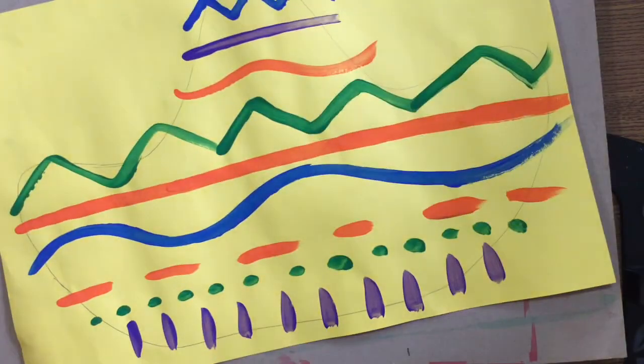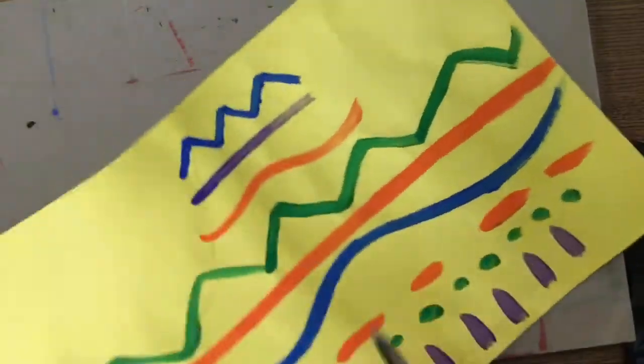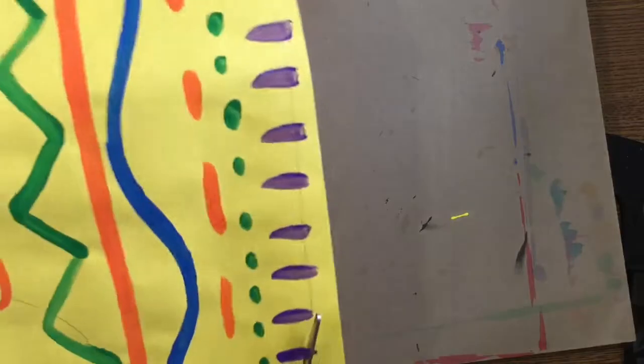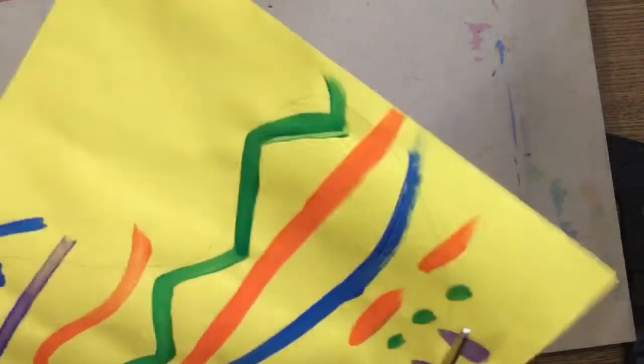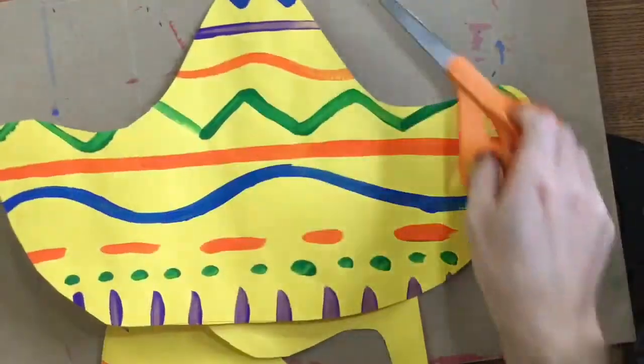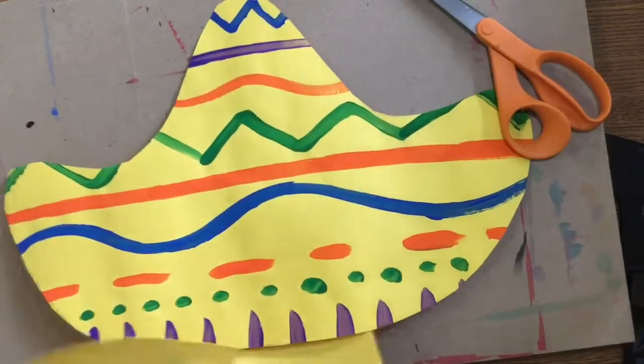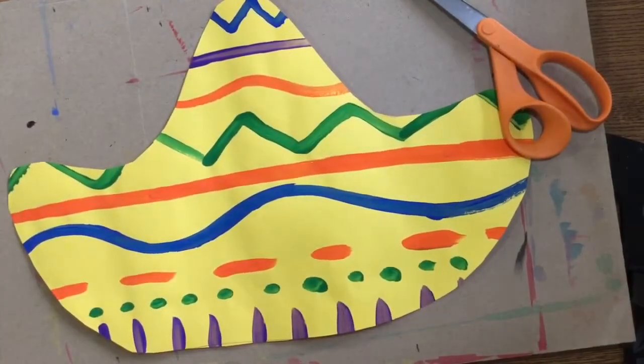You are going to get back your sombrero that we painted last time. We painted all those beautiful lines on it. You need to carefully cut out around that sombrero. Follow the line that you traced last class. After you have that sombrero cut out, you can throw your scraps in the garbage.